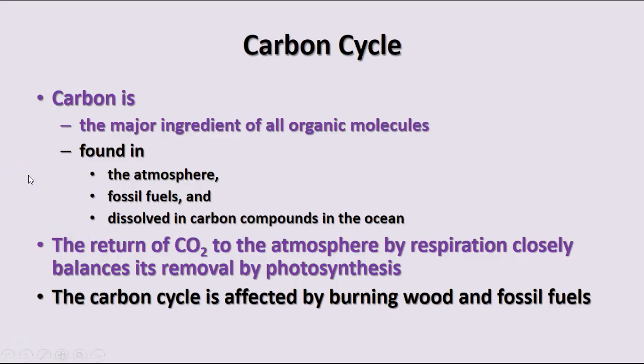The first cycle we'll talk about is the carbon cycle. Carbon is the main ingredient in all organic molecules, and we find it in many places — in the air, in fossil fuels like coal and oil, and dissolved in the ocean. Returning carbon dioxide to the atmosphere by respiration balances its removal by photosynthesis. We breathe out carbon dioxide as a result of cellular respiration, which can be used by photosynthetic organisms to make sugars. The carbon cycle is also affected by the burning of wood and fossil fuels, which also produce carbon dioxide.